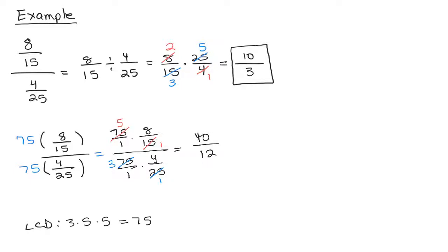And the last thing we need to do is to reduce this fraction. So 4 goes into both of these numbers. You could just divide numerator and denominator by 4, and I'm still going to get 10/3. So that's how we do 8/15 over 4/25. We take that complex fraction and we simplify it using either of these two methods.